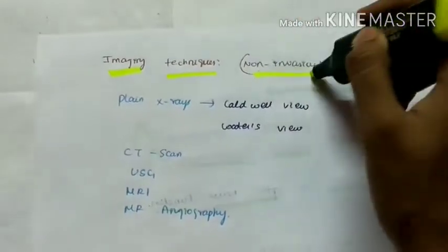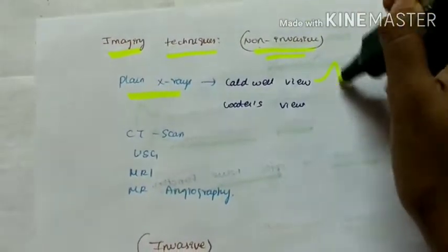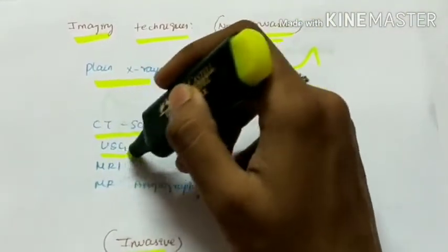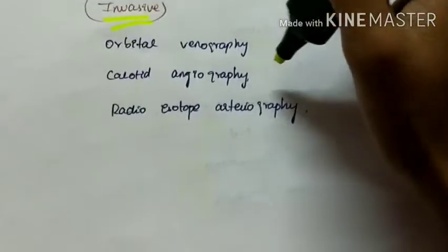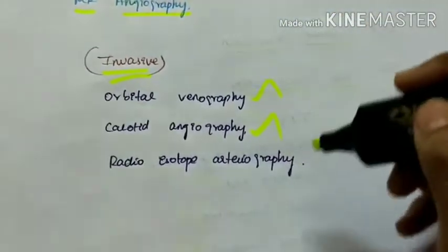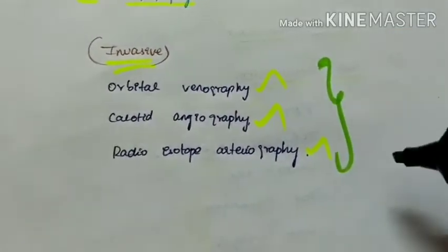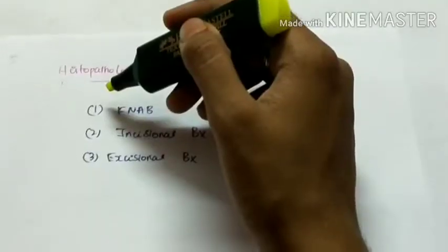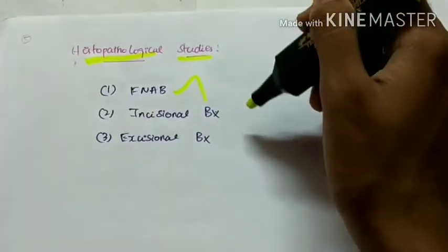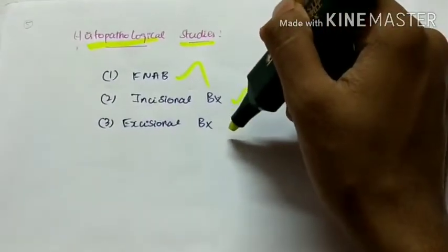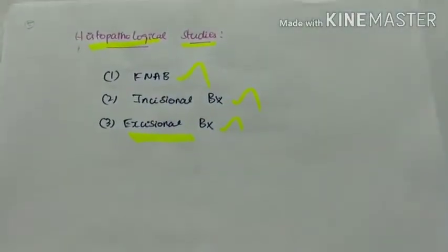Imaging techniques can be non-invasive or invasive. Non-invasive techniques include plain X-rays using Caldwell's view or Water's view, CT scan, ultrasound, MRI, and MR angiography. Invasive investigations include orbital venography, carotid angiography, and radioisotope arteriography, which can detect vascular diseases. Histopathological studies include FNAC (fine needle aspiration cytology) or biopsy — either incisional or excisional — with excisional biopsy preferred for encapsulated lesions.